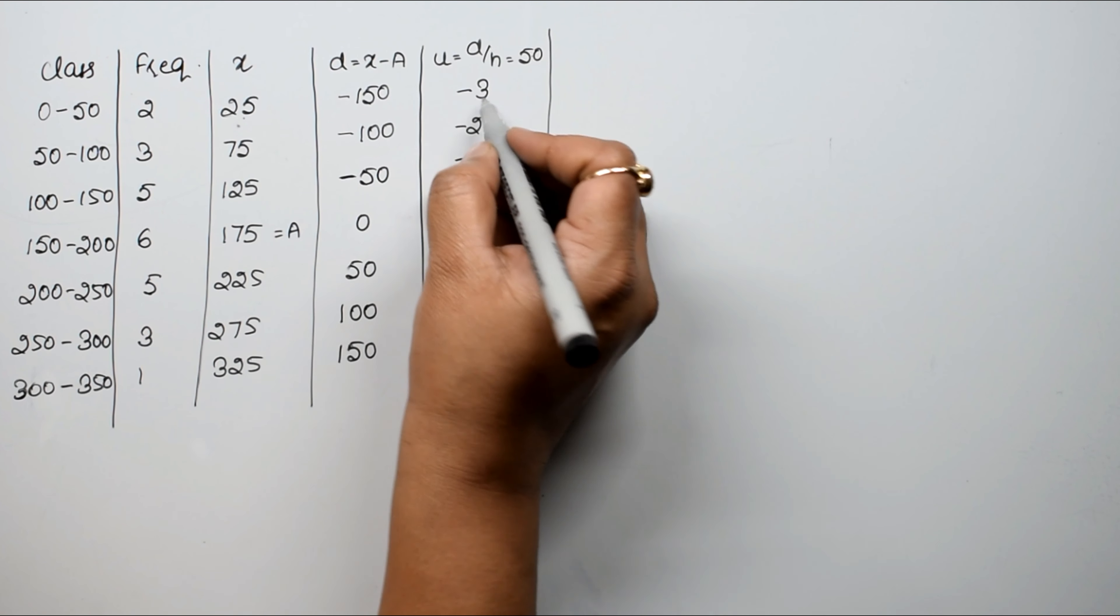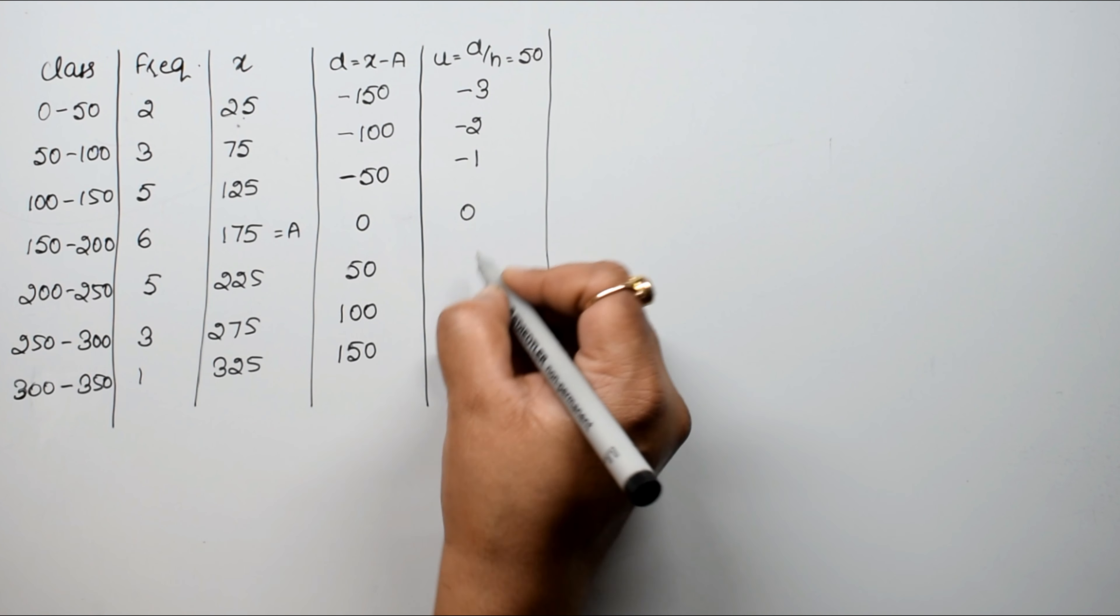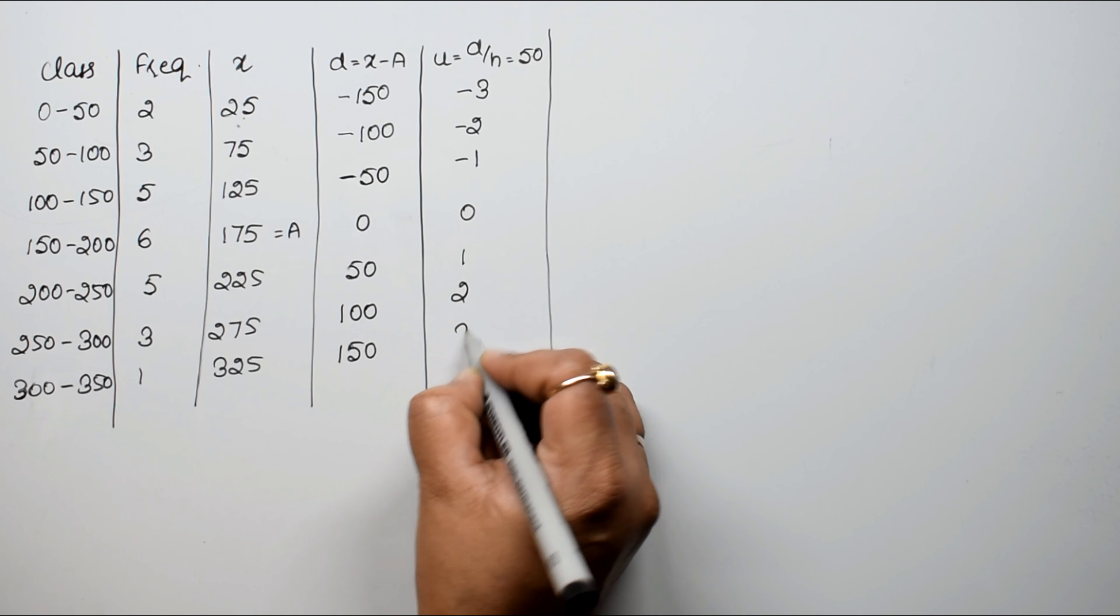So what is our minus 3, minus 2, minus 1, 0. We have divided this from 50, so minus 3, minus 2, minus 1, 0, 1, 2 and 3.